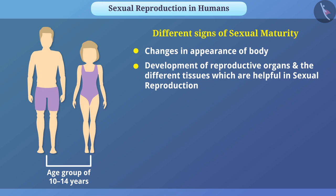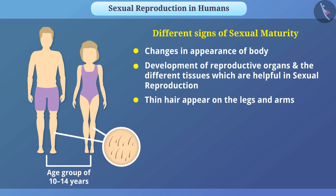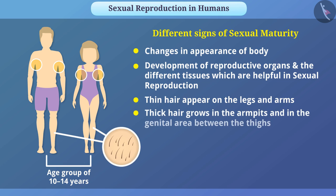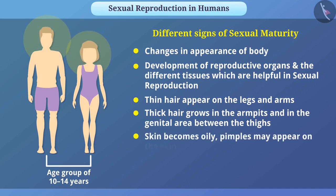Moreover, there are different signs of sexual maturity such as thin hair appears on the legs and arms, thick hair grows in the armpits and in the genital area between the thighs, the skin becomes oily, and pimples may appear on the skin.